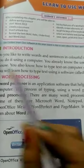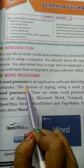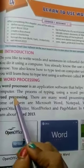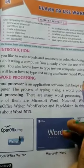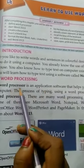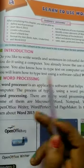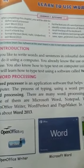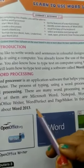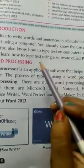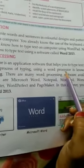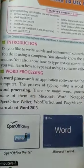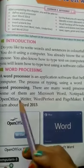What is word processing? A word processor is an application software that helps you to type text on a computer. And the process of typing using a word processor is known as word processing.